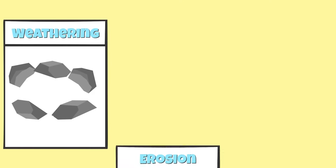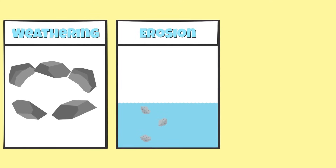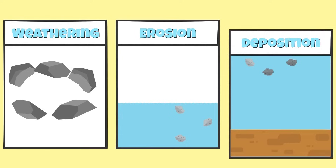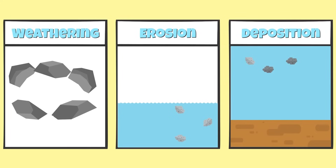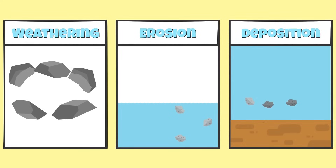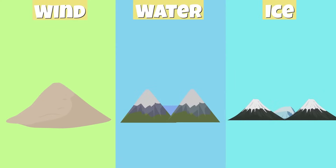Weathering, the process of rocks being broken down, erosion, the movement of rocks, and deposition, the dropping off of sediments, all cause changes to the earth's surface. Wind, water, and ice cause the earth's surface to change through weathering and erosion.